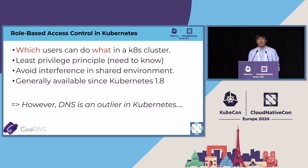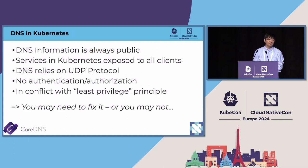Role-based access control has been available in Kubernetes since 1.8 and has been adopted by many companies. However, today I'll discuss a special case — DNS-related information. The uniqueness about DNS is that it's actually an outlier in the Kubernetes environment. DNS information in Kubernetes is always going to be public because DNS serves as an entry point for all services for the purpose of service discovery.